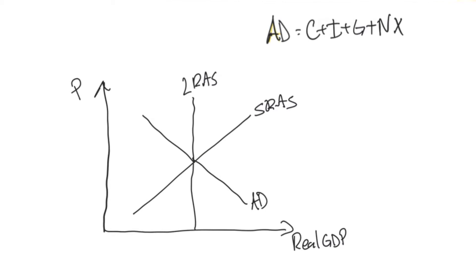I'm going to label our equilibrium point A. We know that Y star is there and P star is right there. So this is an economy that's in equilibrium.